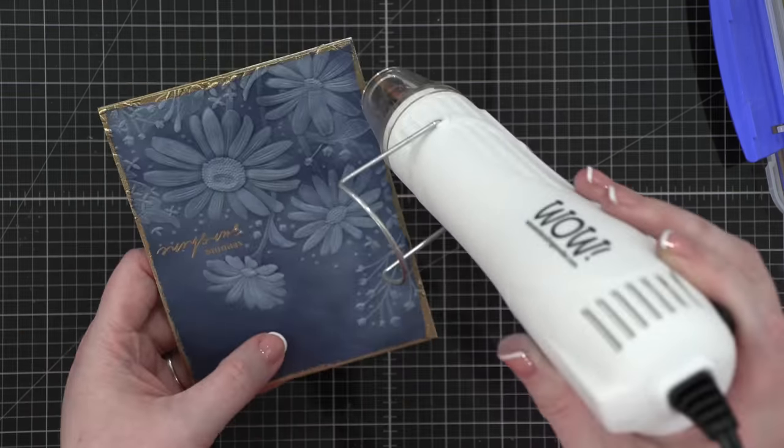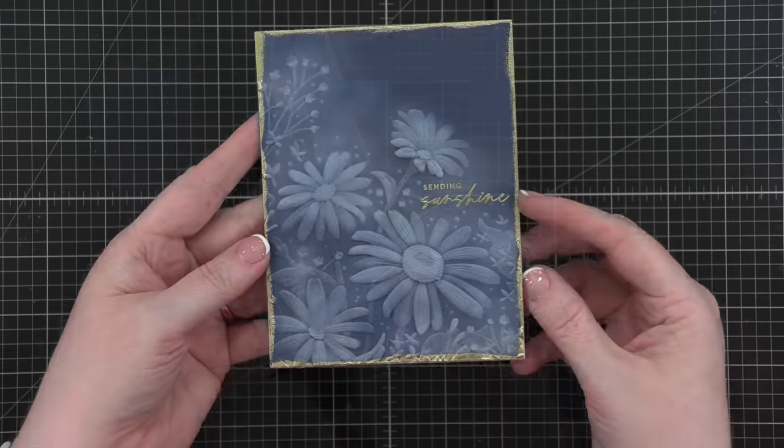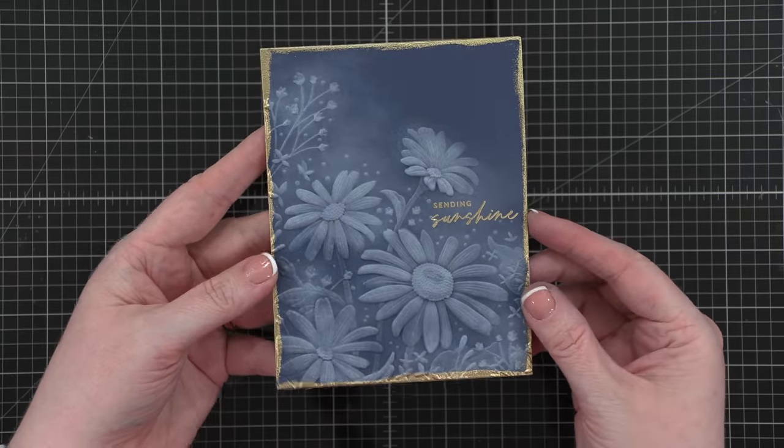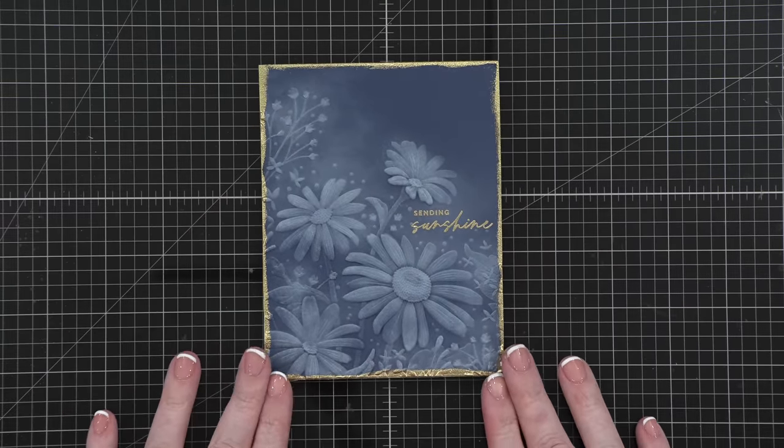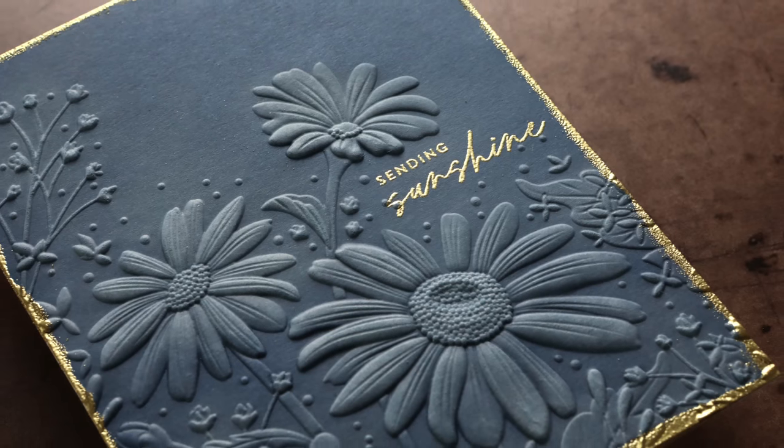So here's the finished card. It came together so quickly and I love it. It's completely gorgeous. I'm obsessed with how beautiful it is. I think I'm going to have to break out even more embossing folders because I just want to emboss everything now.